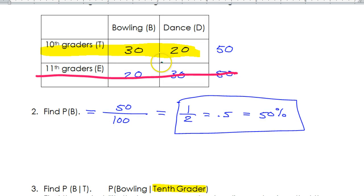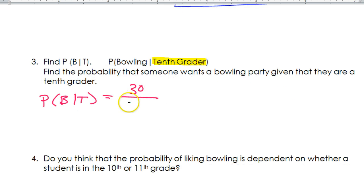So the total there is 50. So 30 out of 50. You can easily see that that's going to reduce to 3 fifths, which I happen to know is 0.6, which is 60%. So this would be the answer.